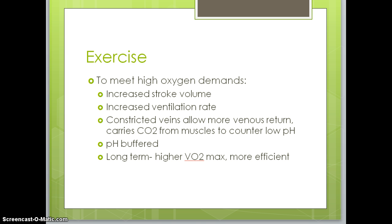There are many adaptations that occur with ventilation during exercise to meet higher energy and oxygen demands: increased stroke volume, increased ventilation rate, and constricted veins, which allow more venous return — pushing blood carrying carbon dioxide from the muscles back — which counteracts the low pH caused by the buildup of positively charged hydrogen ions. Long-term adaptations include a higher VO2 max and a more efficient cardiorespiratory system.